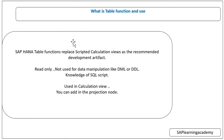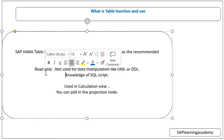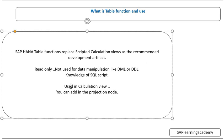First, it is important to know what is table function and its use. In SAP HANA after Service Pack 11, SAP recommends not to use the scripted calculation view. This scripted calculation view will be deprecated and it is recommended to use the table function in its place. Table function is used for read-only — meaning only SELECT statements; you cannot do DML or DDL. That should be done in the procedure. In a table function you can read the data and utilize it in the calculation view projection.